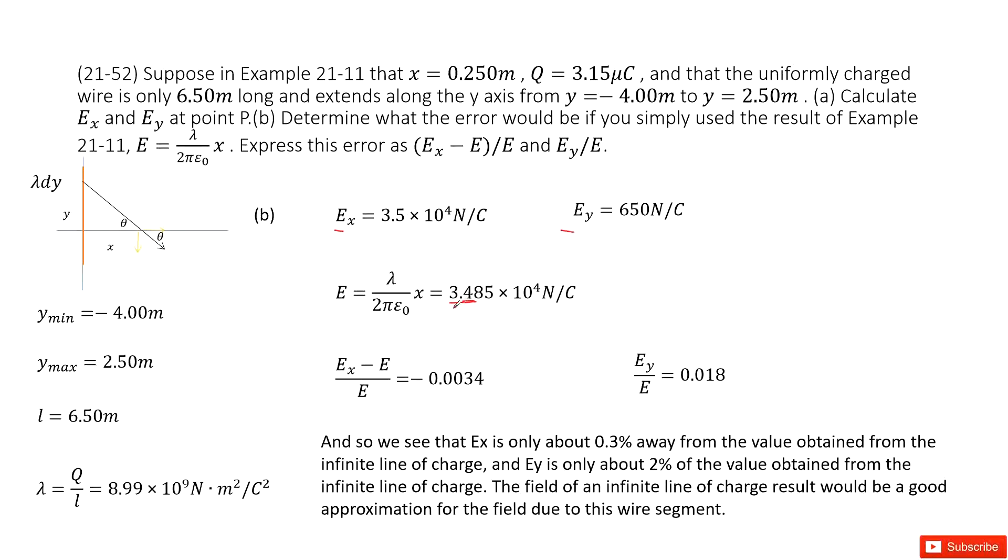Now we can look at the error from Ex to E. It's super small - around 0.3% difference. And the error from Ey to E is just 2%. So we can see this is a very small error you can ignore. So next time when you solve this kind of problem, you can directly consider this equation.